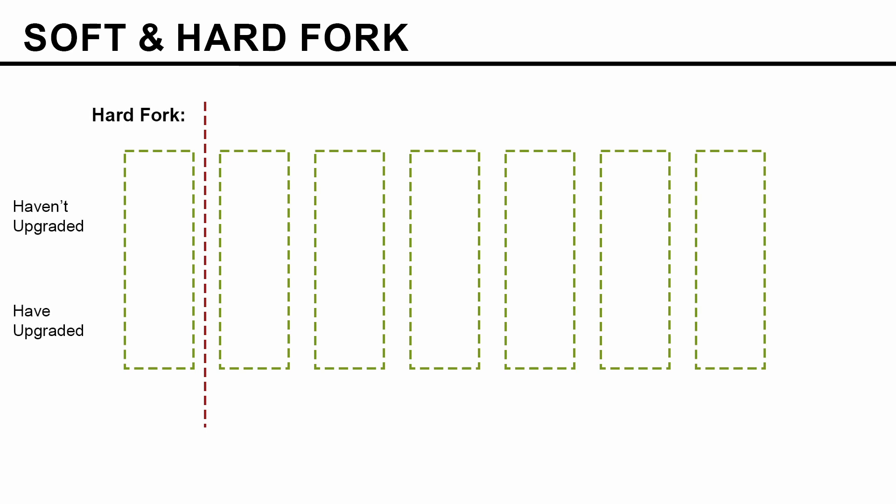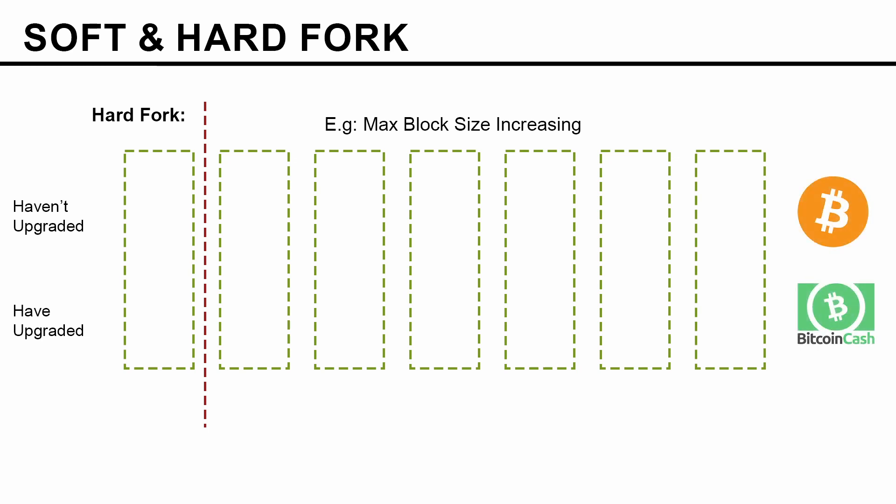First, let's see how hard fork works. We have two groups: one group who have not upgraded their software for the new rules, and another group who have upgraded their software as per the new rules. Let's see an example on maximum block size increasing. This is indeed an example of hard fork. As we know from real life, there is Bitcoin and Bitcoin Cash. Bitcoin has a maximum block size of 1 megabyte whereas Bitcoin Cash has a maximum block size of 8 megabyte.